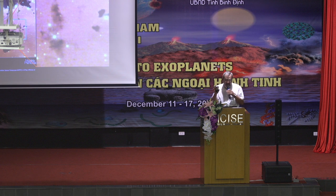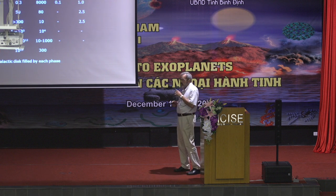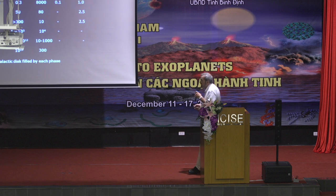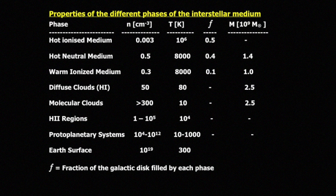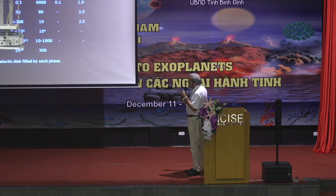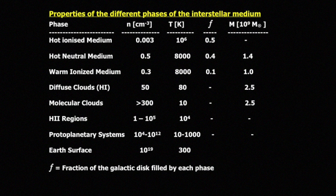To compare with chemistry on Earth: on Earth the density is 10^19 particles per cubic centimeter at 300 Kelvin. The clouds we are talking about have densities between 50 particles per cubic centimeter with temperatures of 80 Kelvin for diffuse clouds, and around 300 particles per cubic centimeter for molecular clouds. As you penetrate deeper into a cloud, densities reach a few times 10^3 to 10^4, and when gravitational collapse produces a star, you can have densities of 10^6 particles.